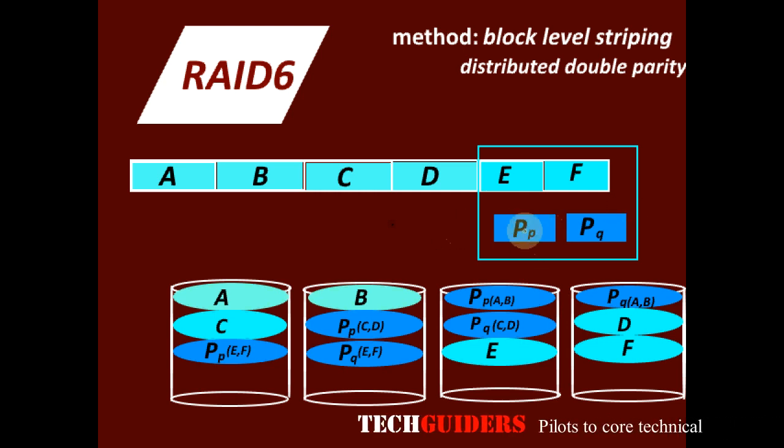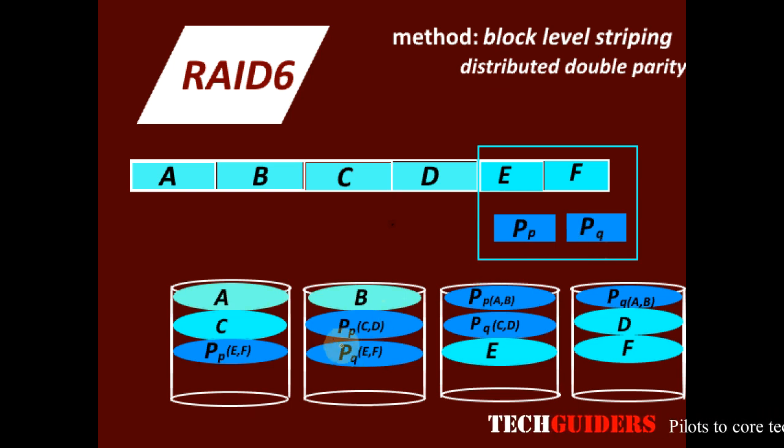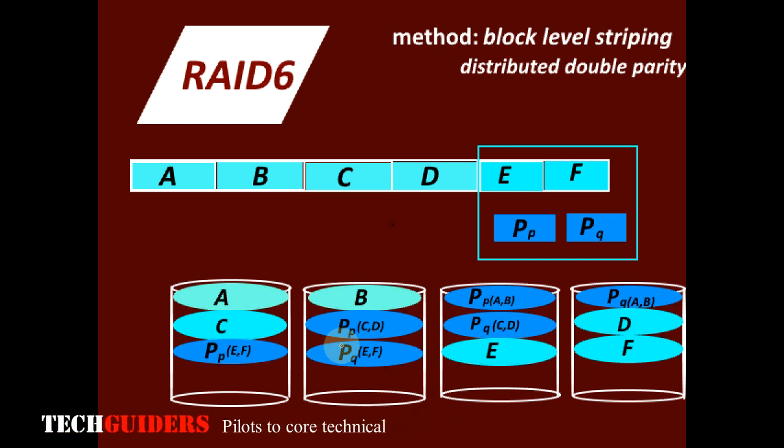The first parity block can be an XOR as in RAID 5, and the second parity block is a bit complex which uses the error correcting code such as Reed Solomon. If it has only one disk failure, the data will be calculated same as RAID 5, and in case of two disk failures, the use of these two parity blocks will help in rebuilding the data.